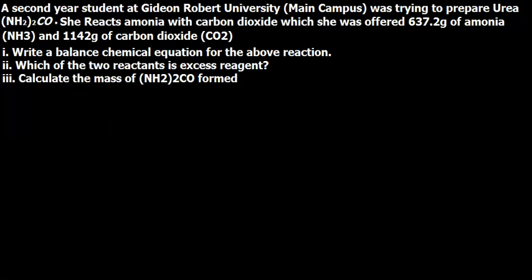The first thing she was asked to do is to write the balanced chemical equation for the above reaction — which is simply the reaction between ammonia and carbon dioxide. The second thing we are asked to find is which of the two reactants is the excess reagent. And last, we are asked to calculate the mass of urea which is formed.